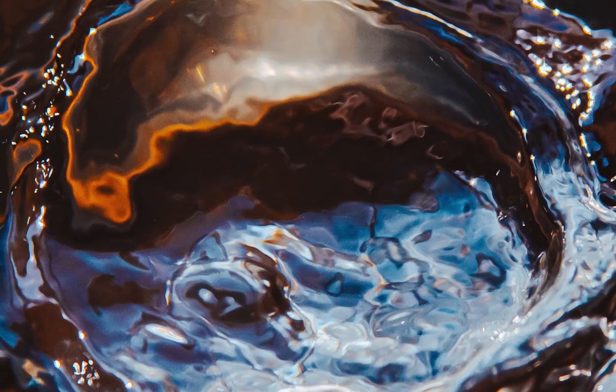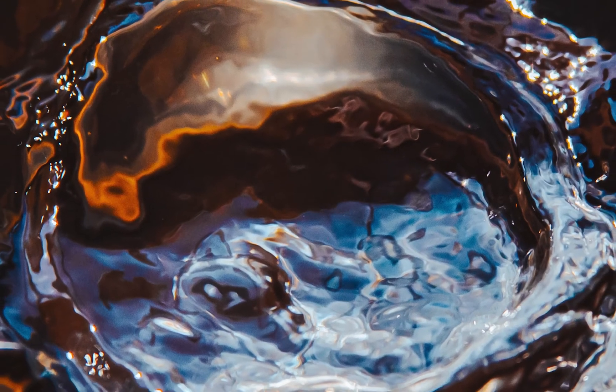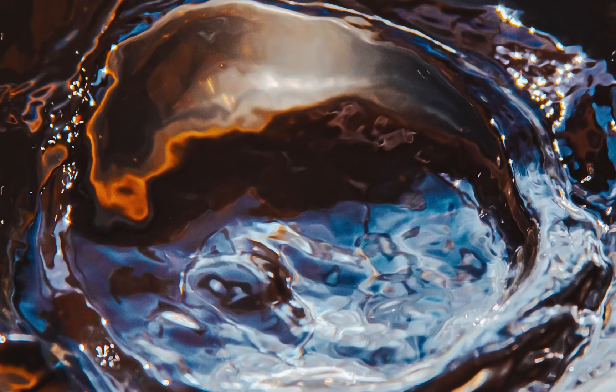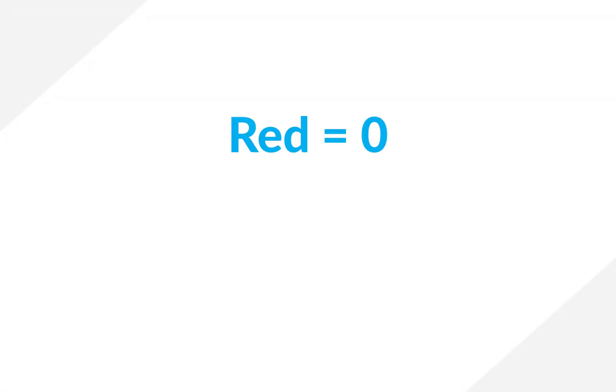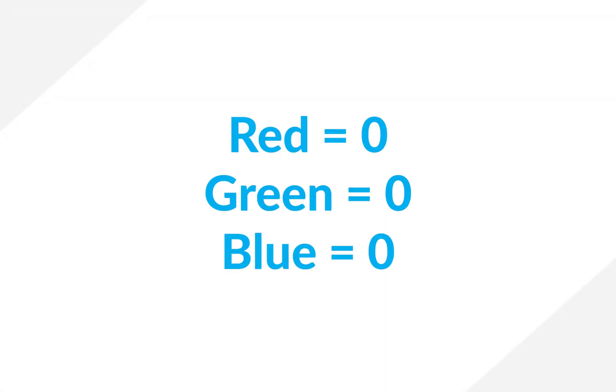Most video and pictures have these three channels — red, green, and blue. But for a transparent background, none of those colors exist. But if you tell a computer red equals zero, green equals zero, blue equals zero, it's going to show black. And that's not what we want.